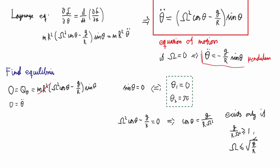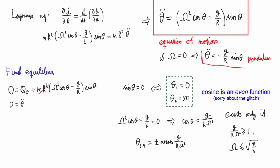The square root of G over R, by the way, is the oscillation frequency of the pendulum that this would make if capital omega is zero — and that's actually no accident. Under those circumstances, we get two solutions: theta_3 and theta_4, which equal plus or minus arccos(g over R*omega-squared). The plus-minus comes from the fact that cosine of theta is an even function.